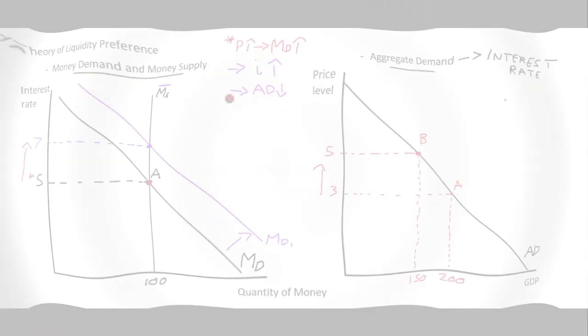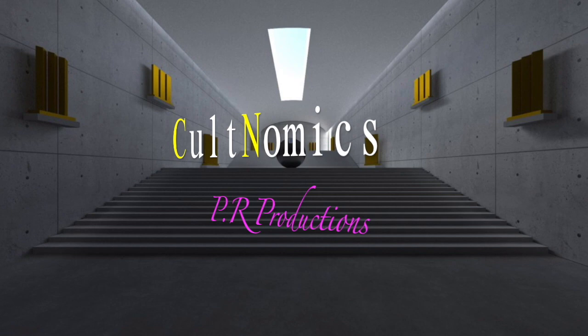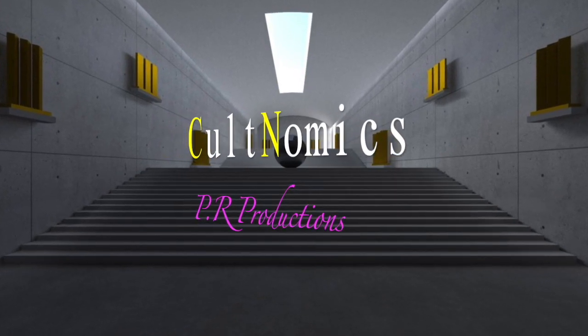And with less spending in the economy from households and firms, we have an aggregate demand curve that is negatively sloped. So what's happening here is the price level is going up and the aggregate demand in the economy is falling. Thanks for watching, I hope you call back to Cultnomics soon. Bye for now.